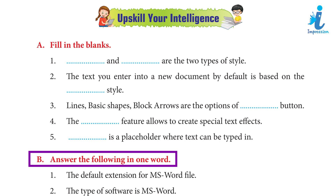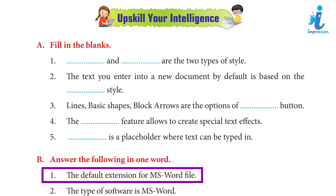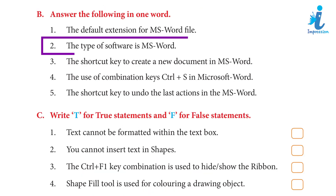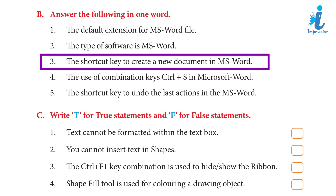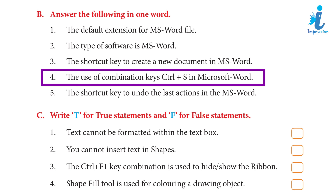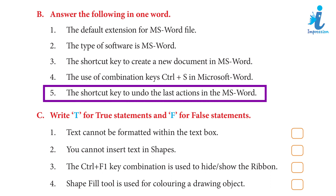B. Answer the following in one word. 1. The default extension of an MS Word file — answer: document. 2. The type of software MS Word is — answer: word processing program. 3. The shortcut key to create a new document in MS Word — answer: Ctrl+N. 4. The use of the combination keys Ctrl+S in Microsoft Word — answer: Save. 5. The shortcut key to undo the last action in MS Word — answer: Ctrl+Z.